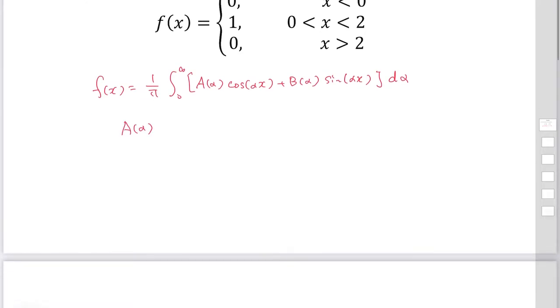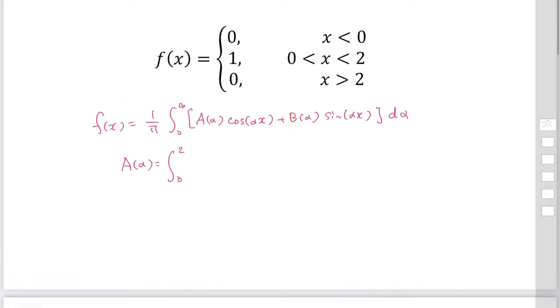a(alpha) is calculated from the integral 0 to 2, because f(x) equals 1 only in this region. Performing this integral gives sin(2 alpha) over alpha.